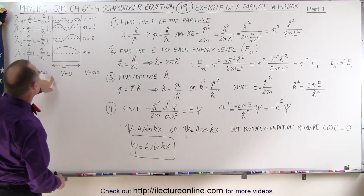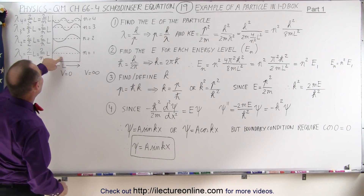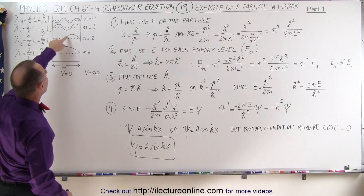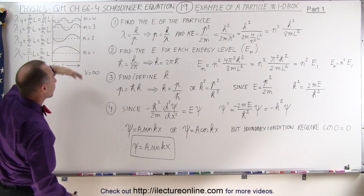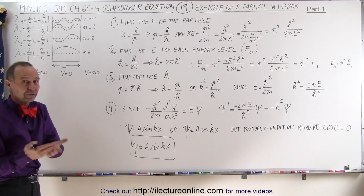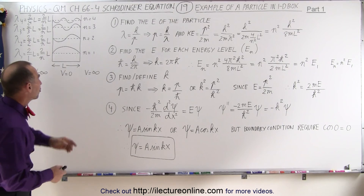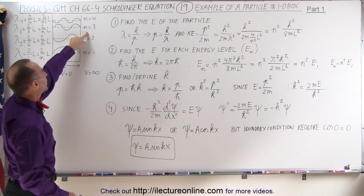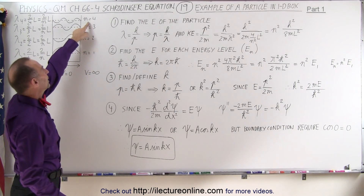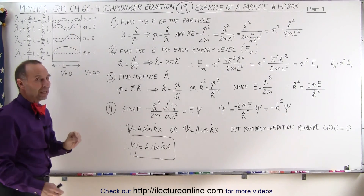Notice here that we have four particular situations — of course many more — but we're only considering the first four energy levels: n equals 1, n equals 2, n equals 3, n equals 4.